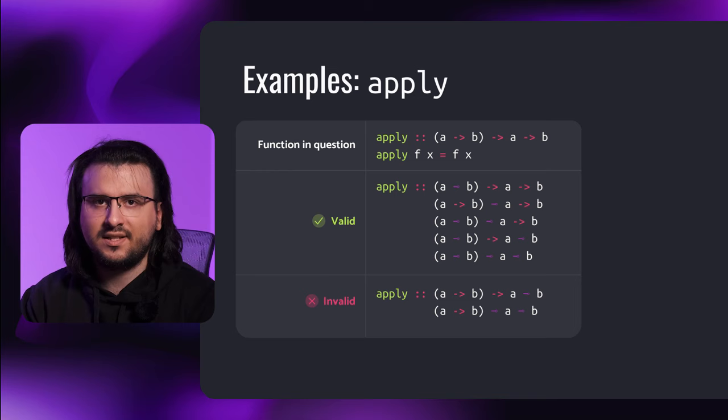Linear logic explicitly bans weakening and contraction, but introduces so-called exponentials to recover the lost expressiveness. We're interested in one exponential called the 'of course' modality, or bang modality, denoted with an exclamation mark. The regular implication in linear logic is defined in terms of linear implication by sticking the 'of course' modality to the antecedent. Translating this into linear Haskell, we get the GADT called Unrestricted that stores an unrestricted argument. The set of unrestricted functions from A to B is equivalent to the set of linear functions from an unrestricted A to B.